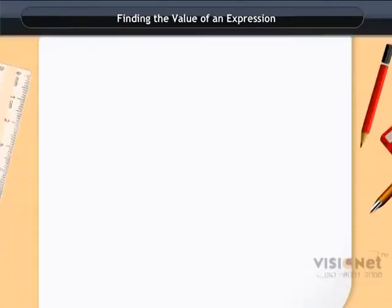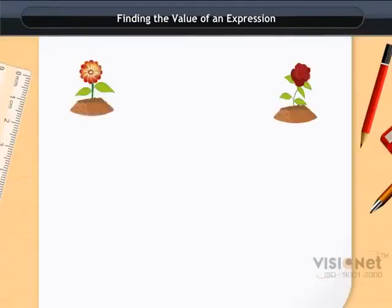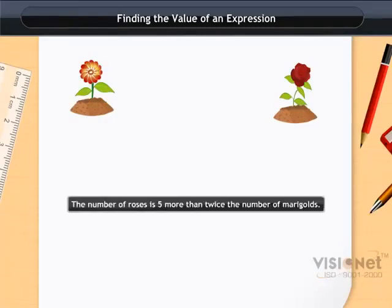She wants to plant roses and marigolds in such a way that the number of roses is 5 more than twice the number of marigolds.